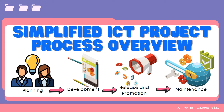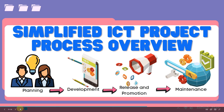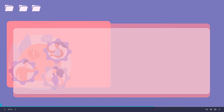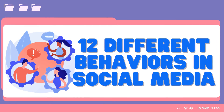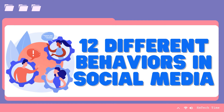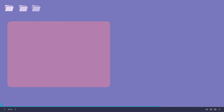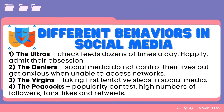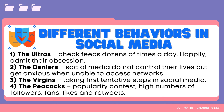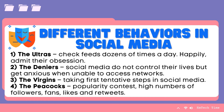As you manage your website, you will encounter different behaviors. According to Rebecca Dye, a social media manager at First Direct, a social media manager should know the 12 different behaviors in social media. The first type is the Ultras — they check their feeds dozens of times a day and happily admit their obsession. 14% of Facebook users spend at least two hours a day on the network.